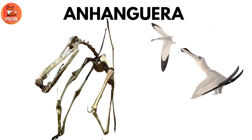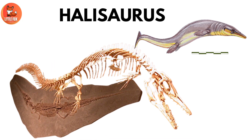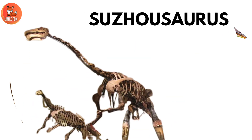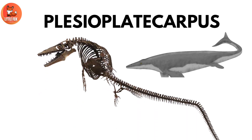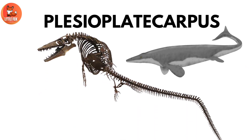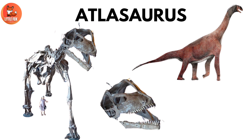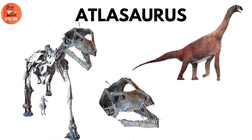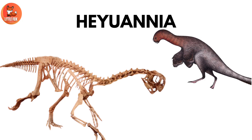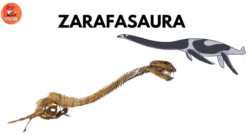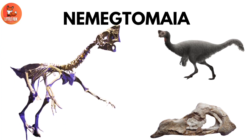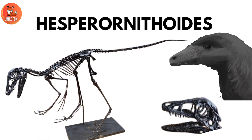Number 25: Anhangara. Number 26: Halyosaurus. Number 27: Sousosaurus. Number 28: Plesioplacarpus. Number 29: Atlasaurus. Number 30: Haywanaya. Number 31: Zarephazora. Number 32: Nemptimea. Number 33: Hesperornithoides.